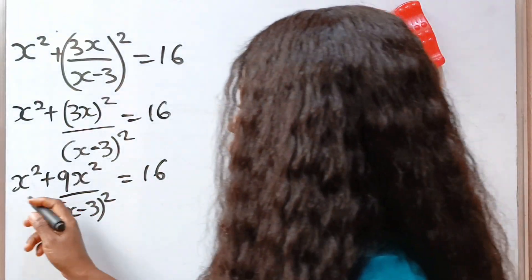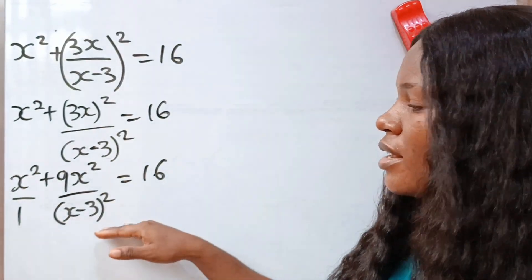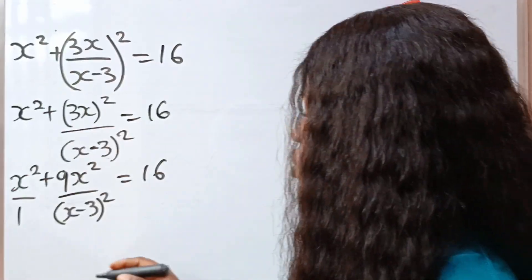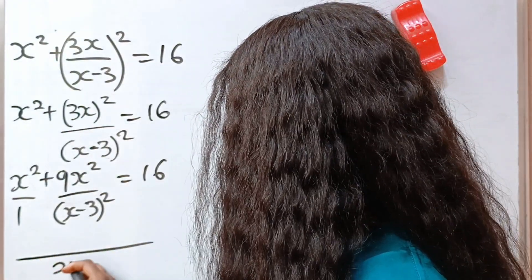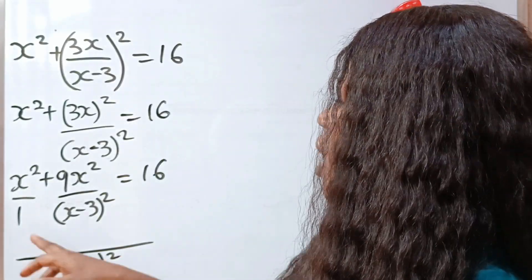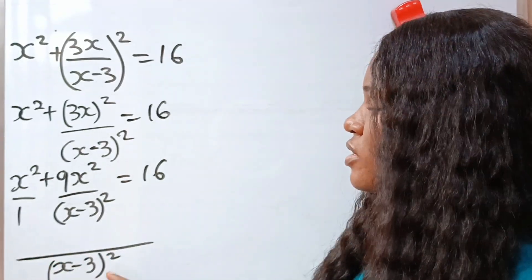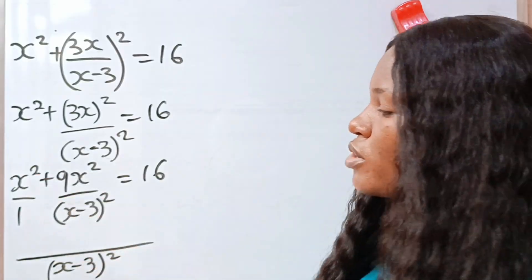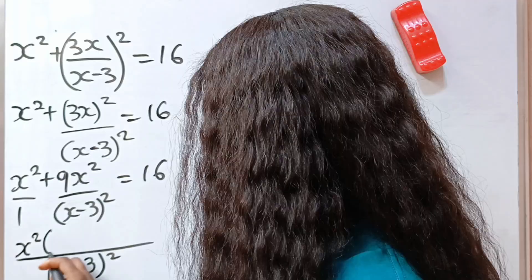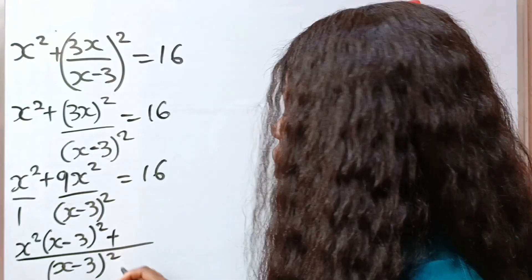Now let's solve this. This reads as x squared over 1. The LCM of this and this is x minus 3 squared. So we have x minus 3 squared. Where 1 divides this, we still have this, so we are going to use this to multiply our numerator. We have x squared bracket x minus 3 squared plus.